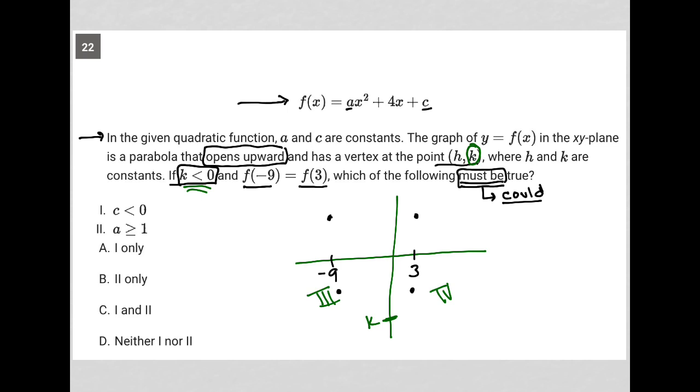So given what I know about this parabola so far - that it opens upward, that the y value of the vertex is negative, and that we have the symmetrical points between negative 9 and positive 3 - let's see what we're being provided with.